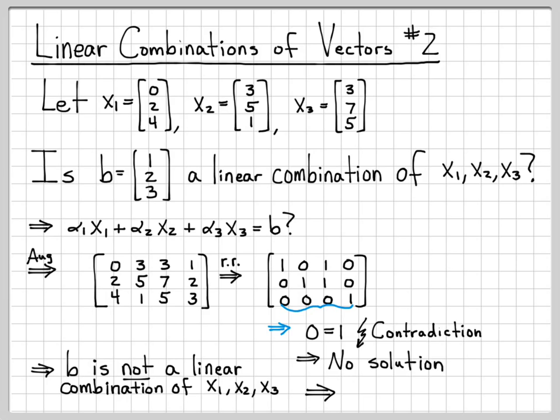There is no solution. Another way of saying this mathematically is that b is not in the span of x1, x2, and x3. Again, remember, the span of a set of vectors is a set, and it contains all linear combinations of the vectors. So we just figured out that b is not a linear combination of these vectors.